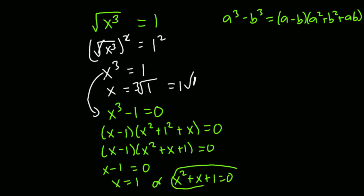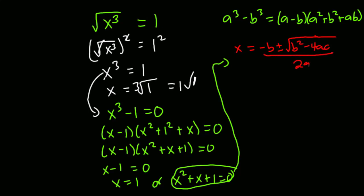From this factored form, either x minus 1 equals 0 — giving x equals 1 as one solution — or x squared plus x plus 1 equals 0. This is a quadratic equation, and I'm going to apply the quadratic formula to solve it. The quadratic formula gives x as negative b plus or minus the square root of b squared minus 4ac, all divided by 2a.